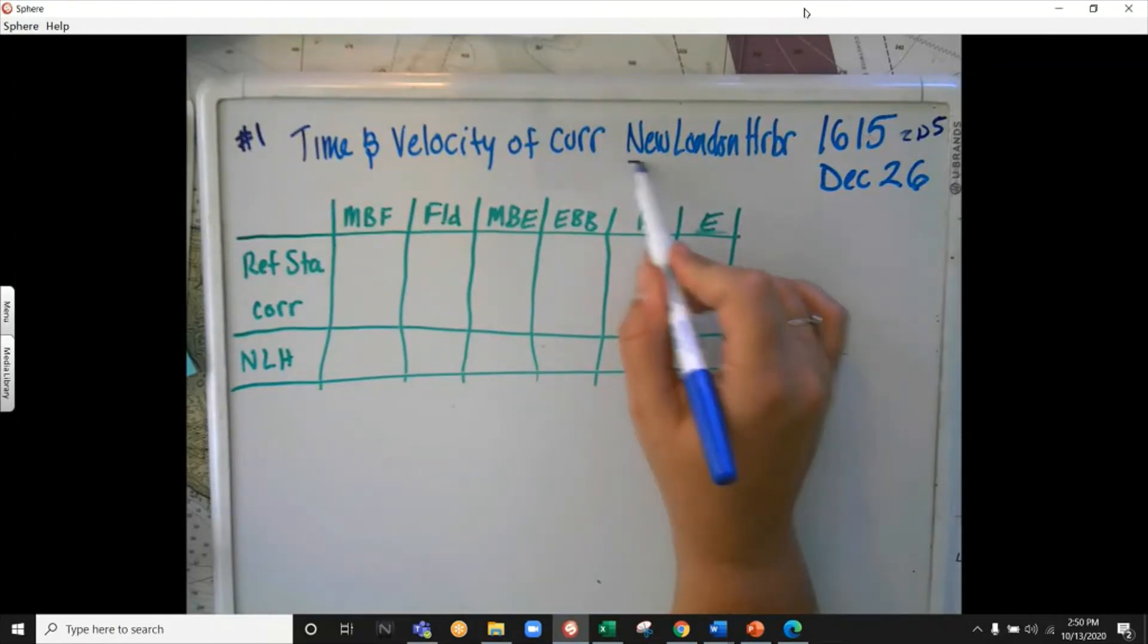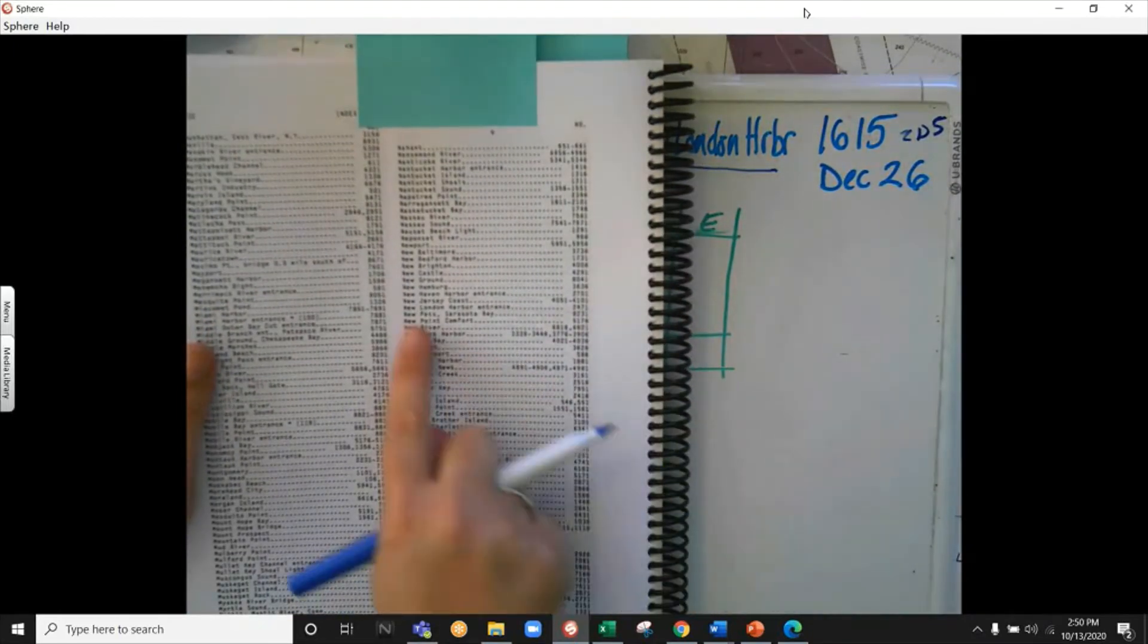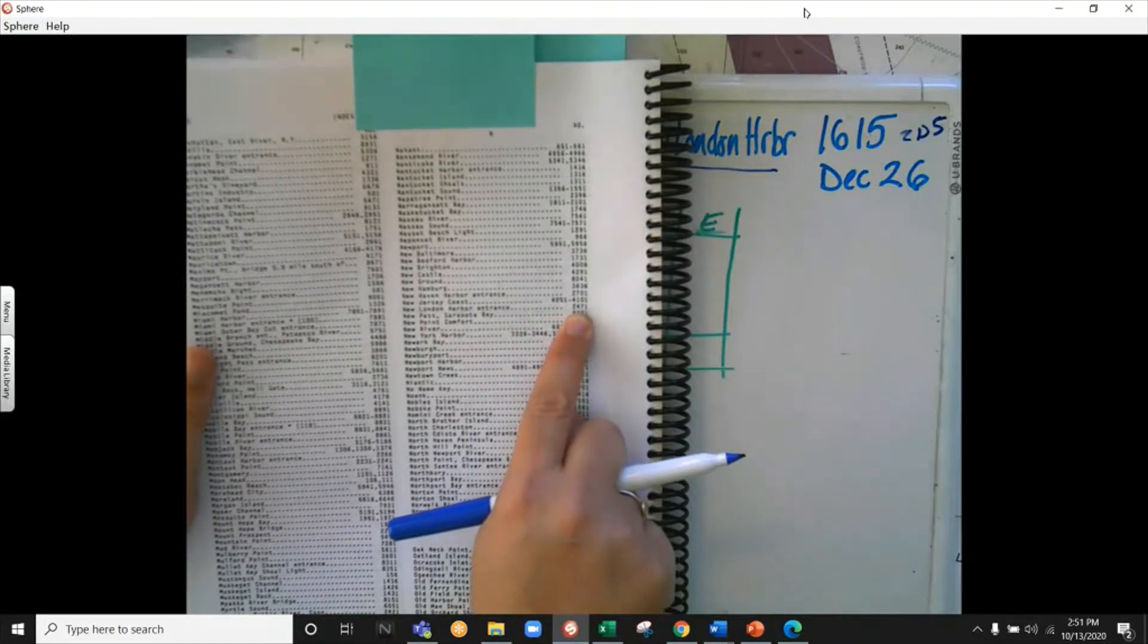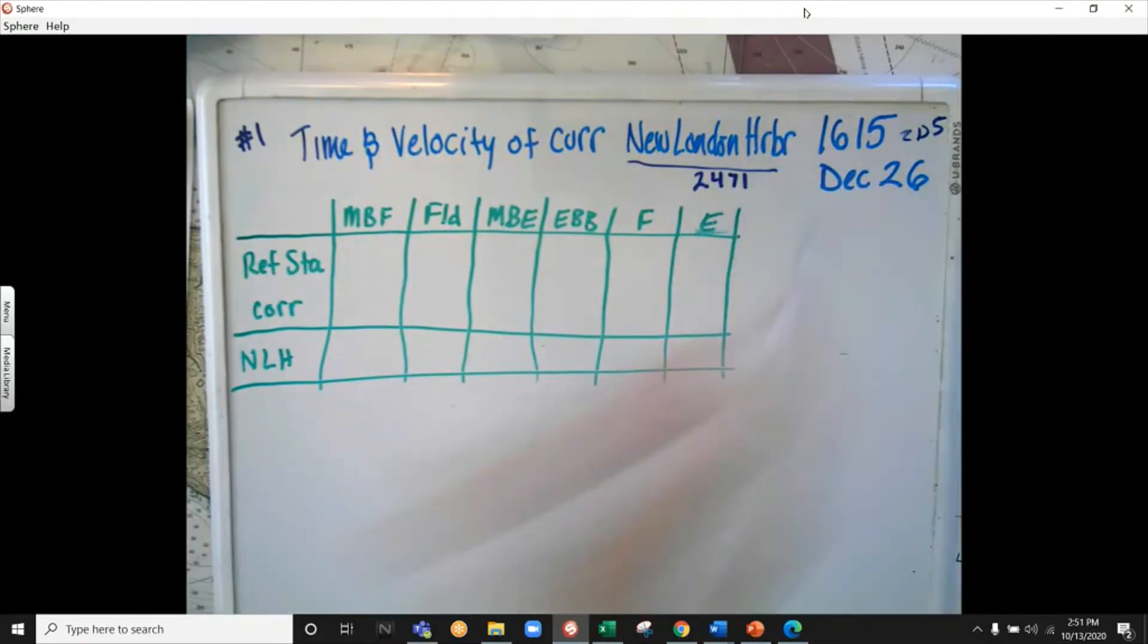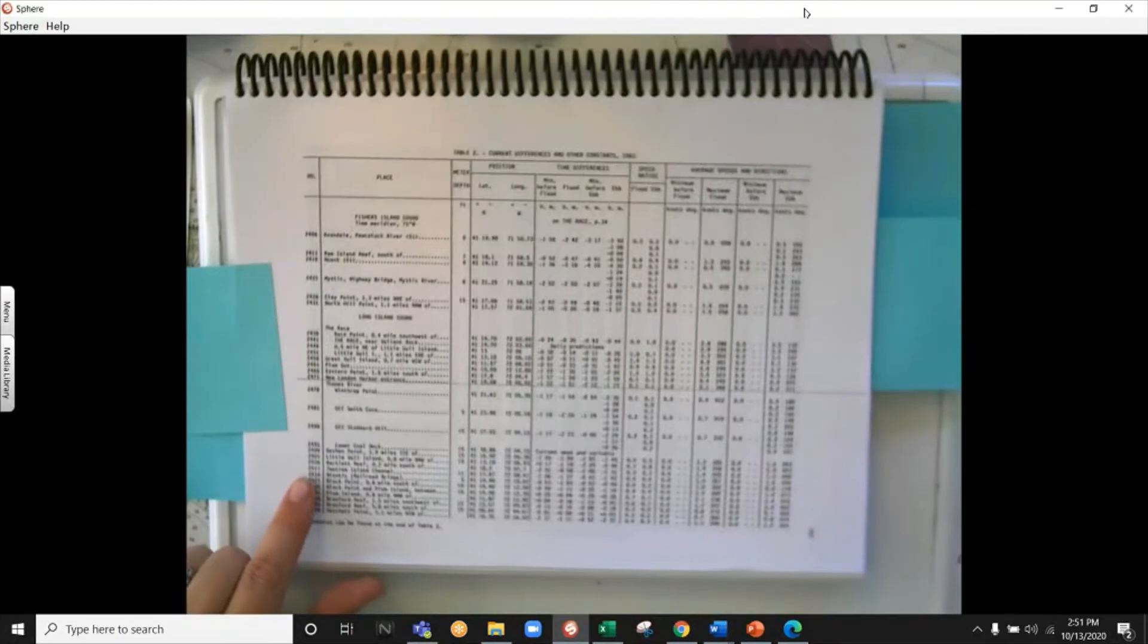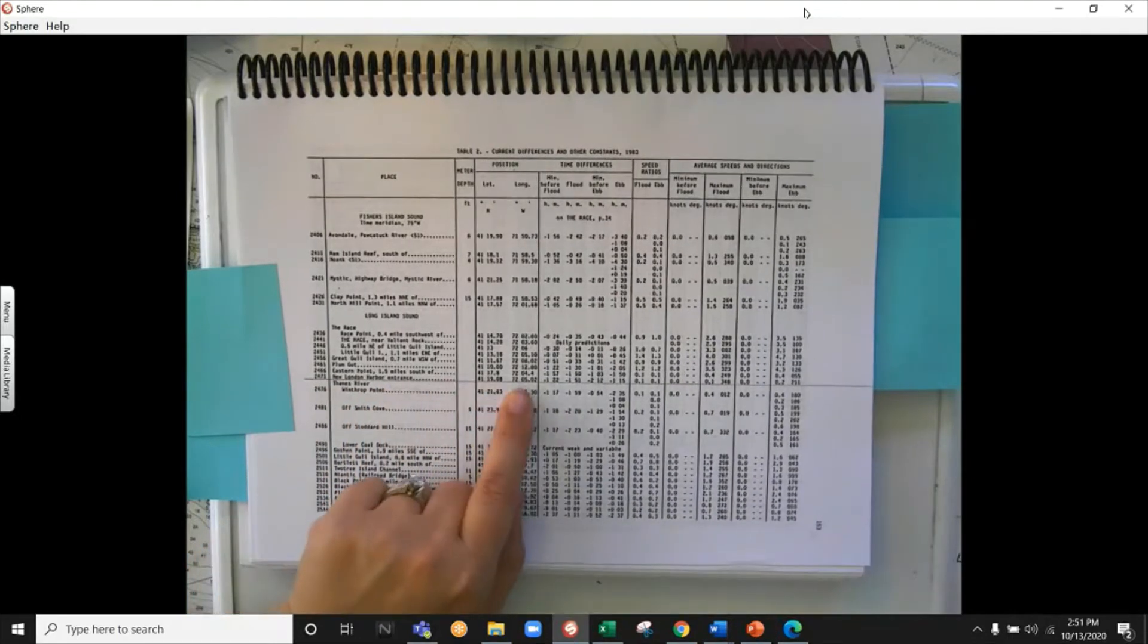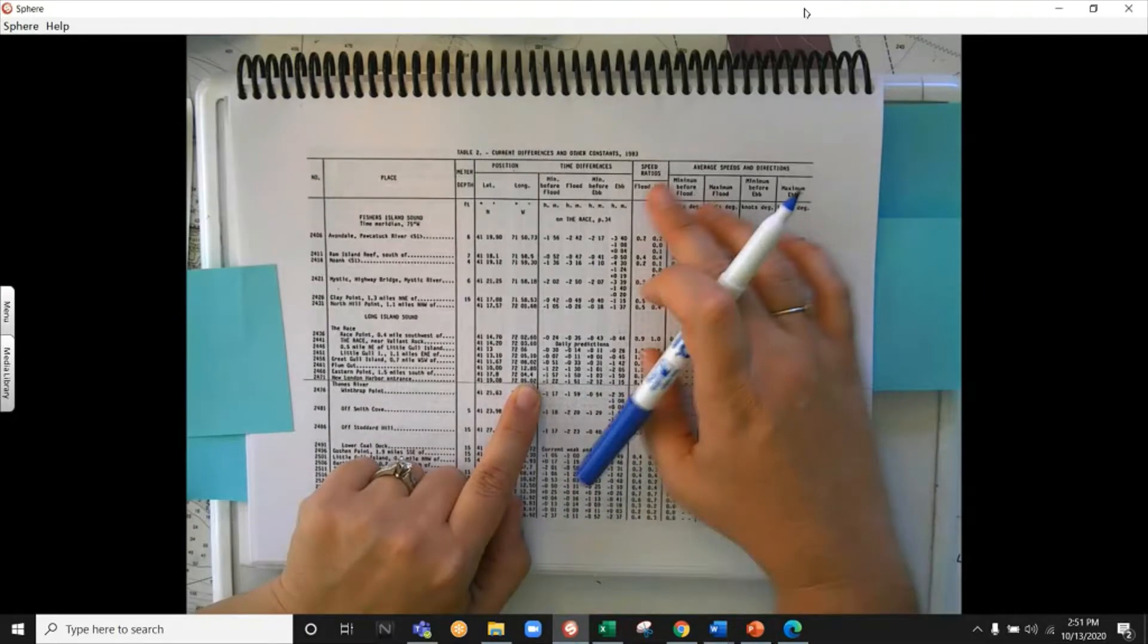The first step is to find where New London Harbor is, so we go to the table of contents. Let me bring that up here. In the table of contents, we want to find New London Harbor. I get the number 2471, so that's the number on table two. I'm just going to write that number down: 2471. Then I can go to table two and find my 2471 New London Harbor entrance. I have the position that they give me just like they did in the tide table.